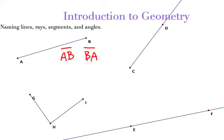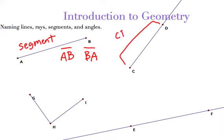A segment has two endpoints. Our next one is CD. So this one has a segment within it. CD right there — if you go from there to there, that is a segment, which we can call DC or CD. But the whole thing is a ray.